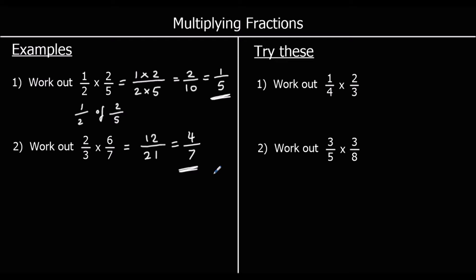Question one: we've got one-quarter times two-thirds. We're going to times the tops, so one times two is two. Times the bottom, so four threes are twelve. So we've got two-twelfths. We can simplify our answer because they're both even — they're both in the two-times table — so we half the top and half the bottom.